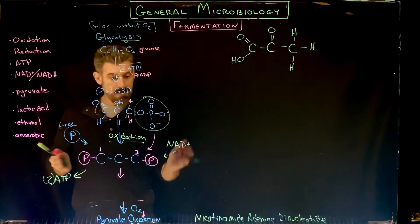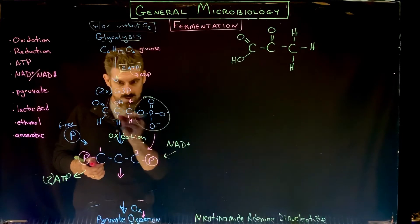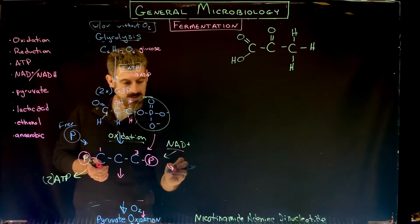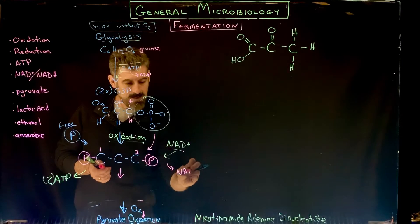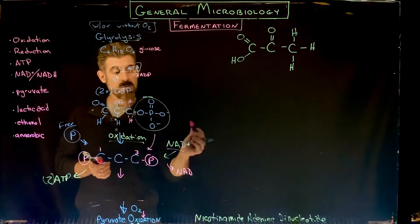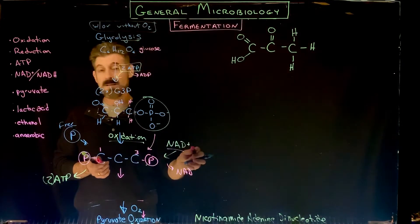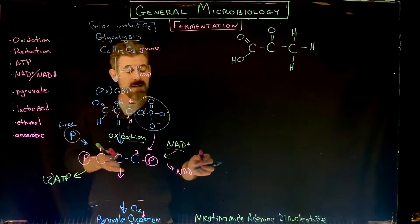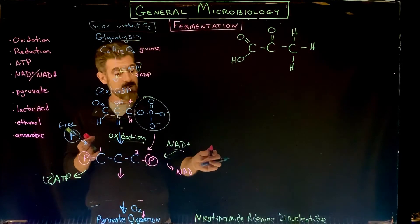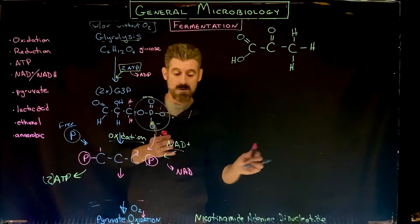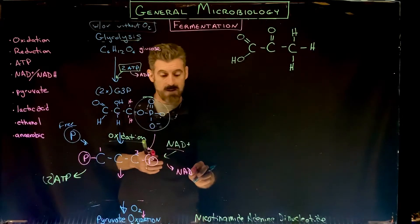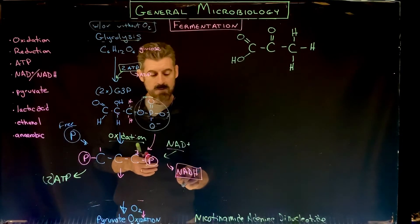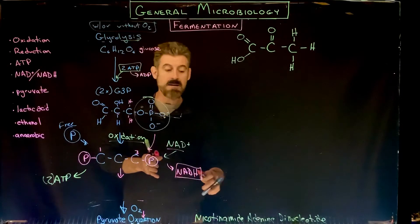Those electrons will be picked up by NAD and it will leave as NADH. One electron makes it neutral, a second electron would make it negatively charged, but that attracts a positively charged proton. One proton plus one electron is a hydrogen, so we make the molecule called NADH.